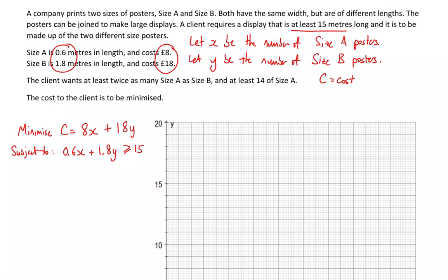I don't particularly want to keep it with decimals, so I'm going to make this easier for myself. I'm going to multiply through by 10 to get 6x plus 18y is greater than or equal to 150, and then I could divide through by 6. So x plus 3y has got to be greater than or equal to 25, which would be easier to draw.